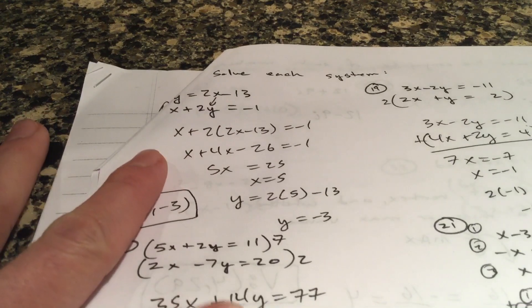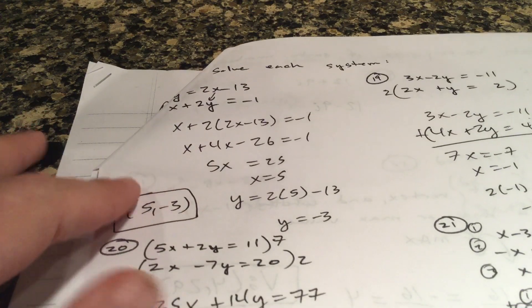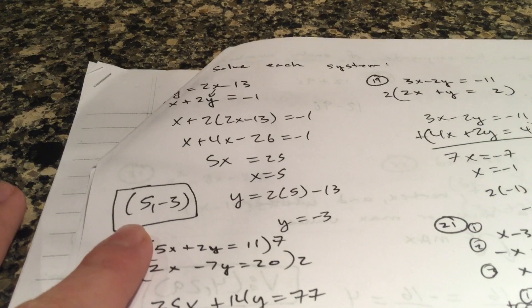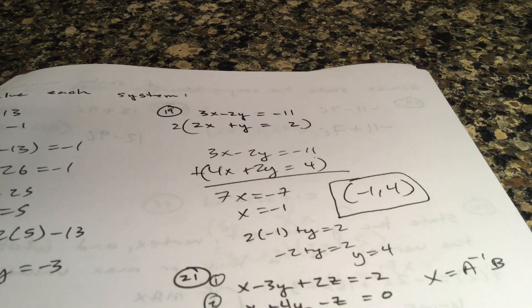Folks, I did a little substitution, plugged in 2x minus 13 in for y. Solve for x, plug it in for x in that top equation here. Again, pause them and try to make both those reviews in under 15 minutes.